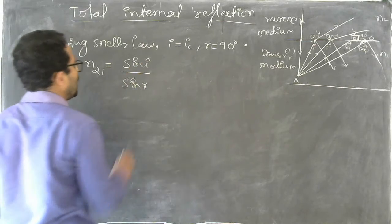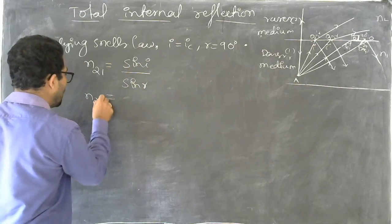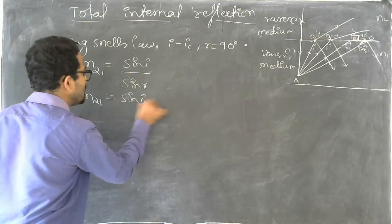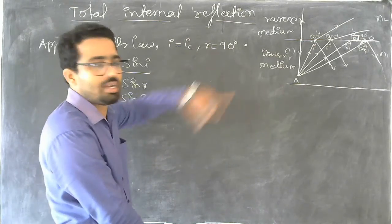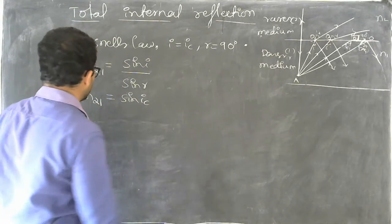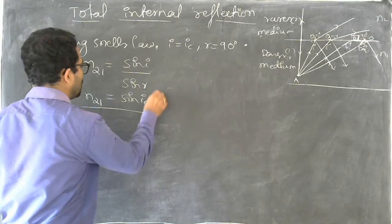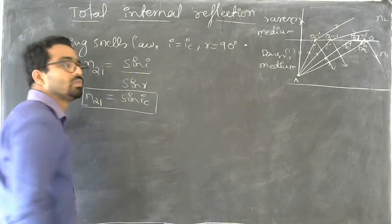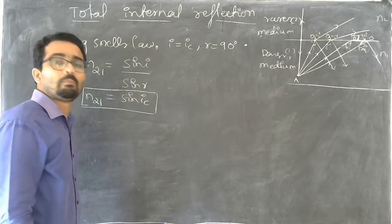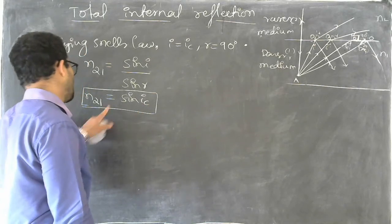sine i by sine r, and n21 equals sine ic divided by sine r. When r equals 90 degrees, sine r equals 1, so n21 equals sine ic. Using this formula we can find out the critical angle as well as the refractive index.